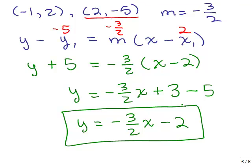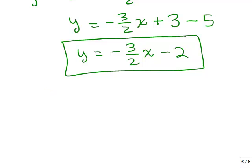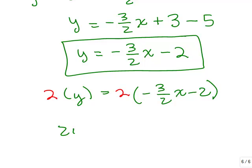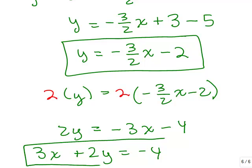I've put these in slope-intercept form, but you could also put it in standard form by multiplying both sides by 2 and putting the x term on the other side. Take this equation, multiply both sides by 2: 2y equals — distributing — negative 3x minus 4, or 3x plus 2y equals negative 4. That is the line in standard form.